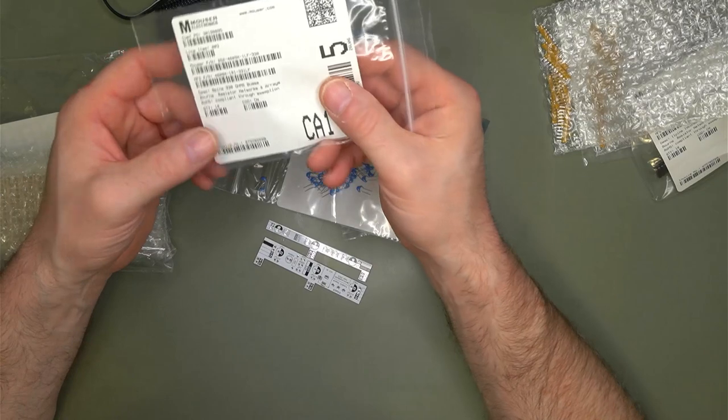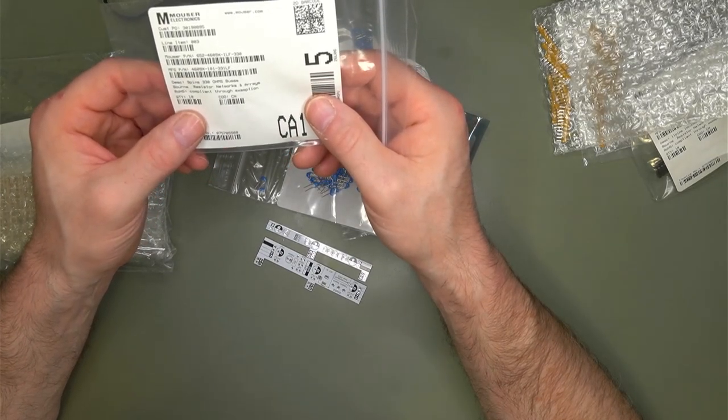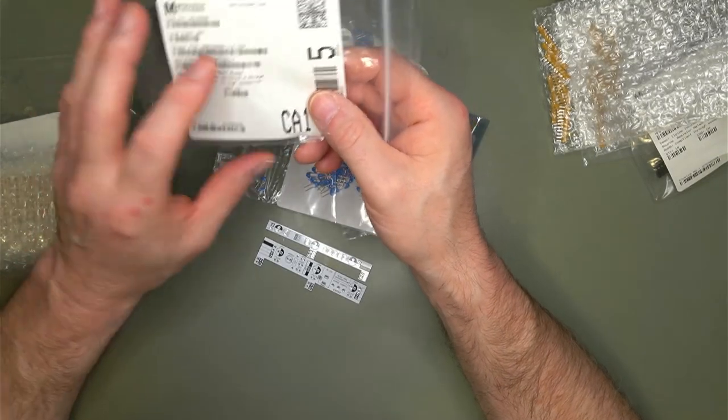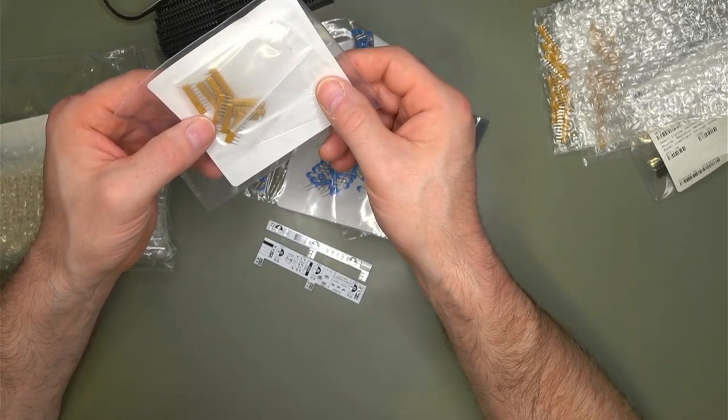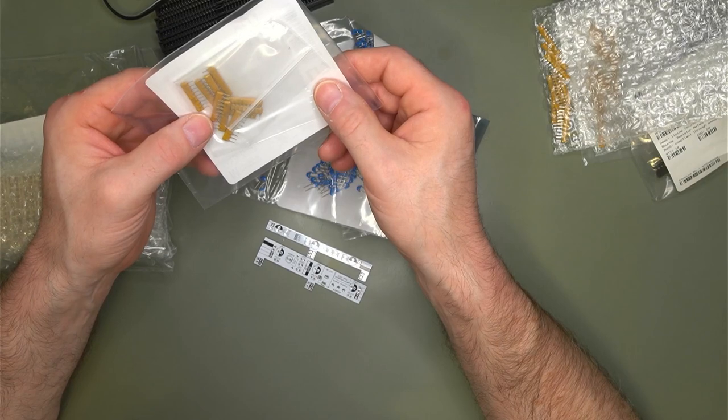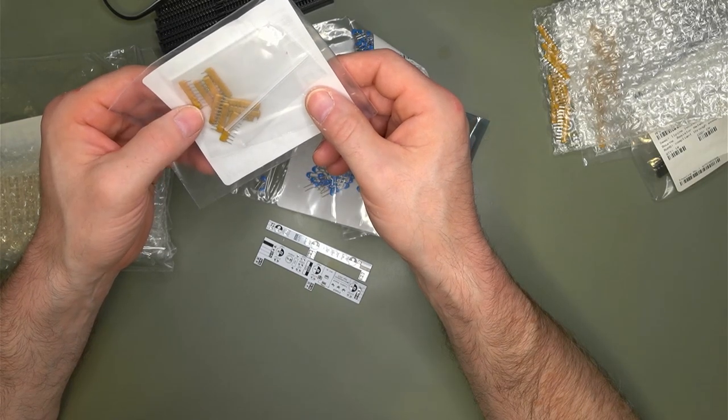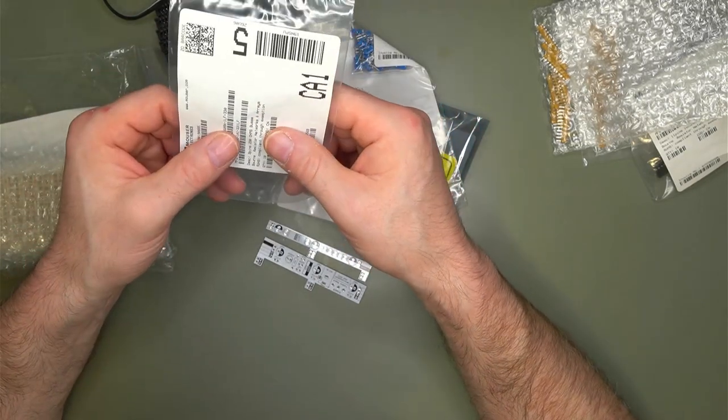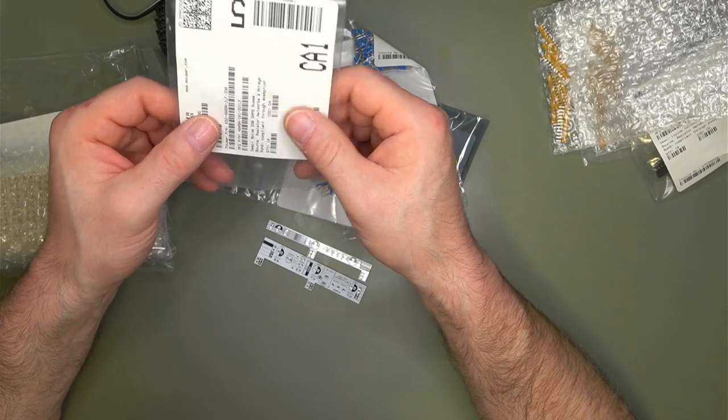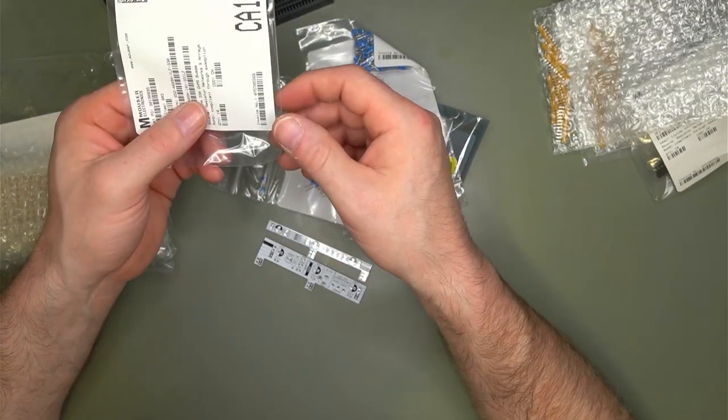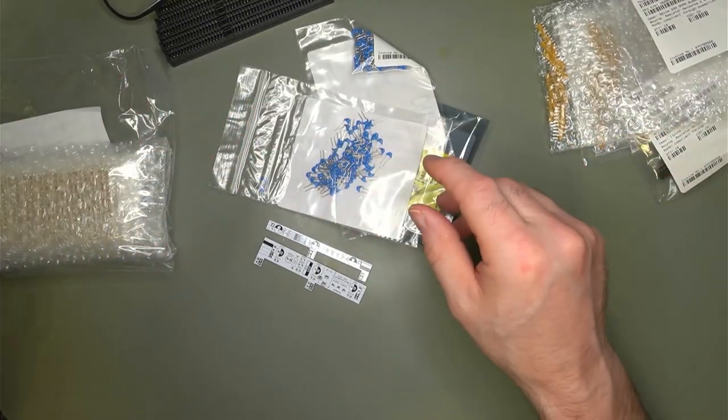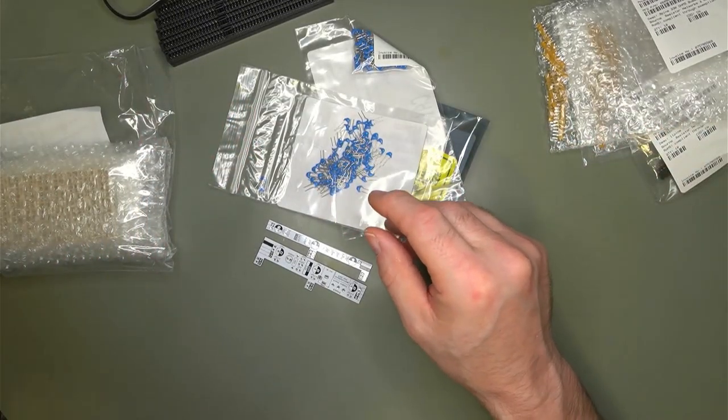Here, more resistor networks, this time 300 ohms. These will be used for bar graph LEDs. Because they are quite bright, the ones I have. They're white. And I probably should have taken 1K, but 330 is fine. 220 would have been short.